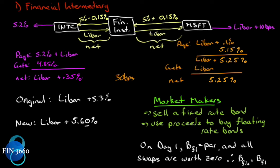Let's think about what this swap would actually look like if we set up a trade in the marketplace. We could sell a fixed-rate bond — owing a fixed rate of interest — and use the proceeds of that bond to buy a floating-rate bond, thereby receiving a floating rate of interest. That's basically a swap: sell the fixed rate, use the proceeds to buy the floating rate, receive floating-rate interest, pay fixed-rate interest, and hope to make money.